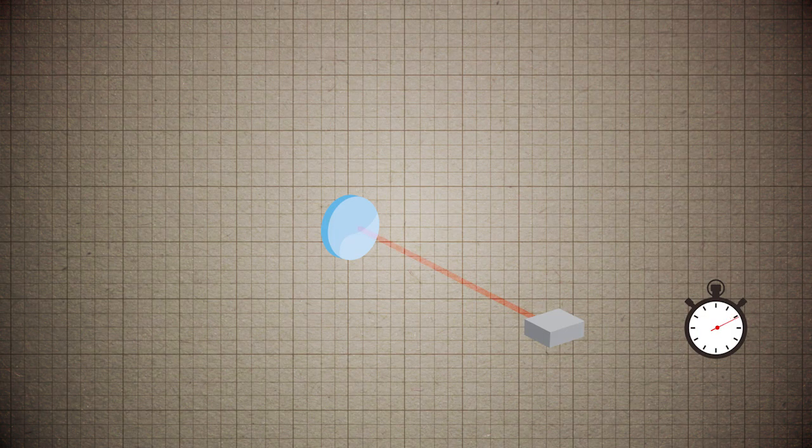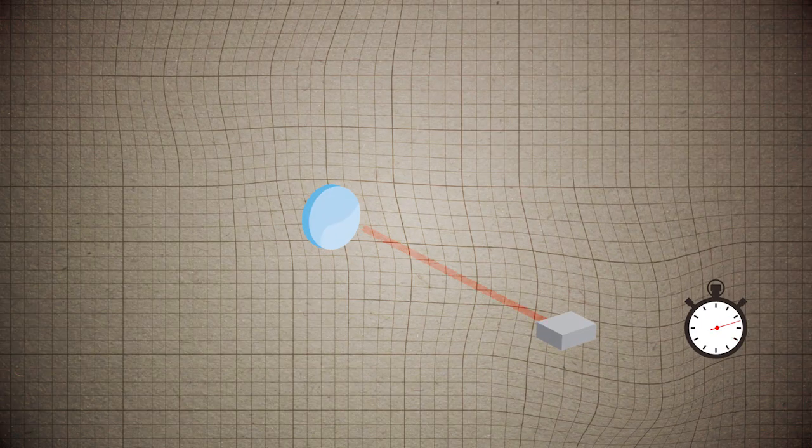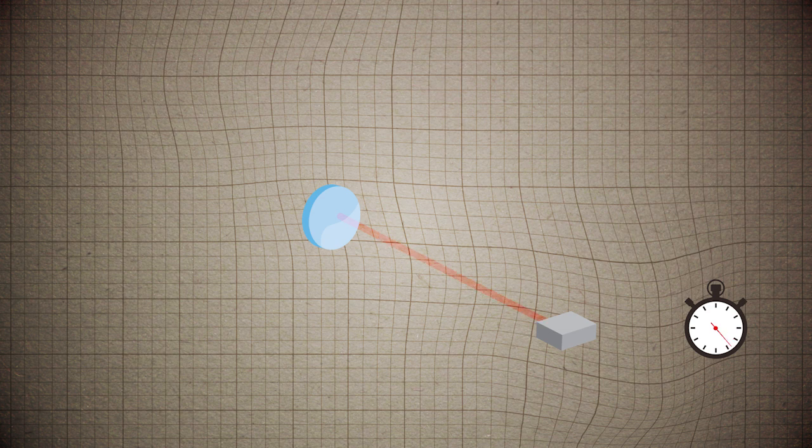So all I have to do is measure the travel time of the light going out to the mirror and coming back. If a gravitational wave passed through this region, then the distances between these two would change and the light travel time would change and I could register or record the passing gravitational wave. And the principle is as simple as that.